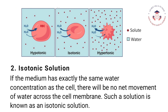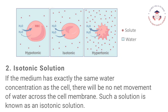Isotonic Solution: If the medium has exactly the same water concentration as the cell, there will be no net movement of water across the cell membrane. Such a solution is known as an isotonic solution.